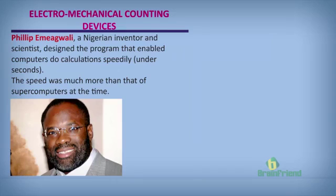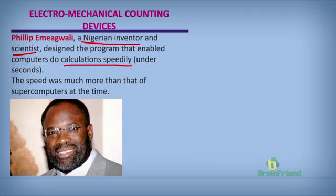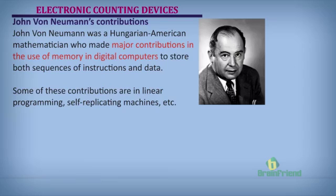Philip Emegwali is a Nigerian inventor and scientist. He designed programs that enable computers to do calculations easily and quickly, under seconds — at a speed much faster than that of a supercomputer at the time — and programs that helped with the movement of data.